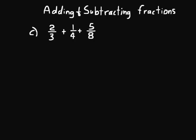Now let's apply what we know about making common denominators to adding and subtracting fractions. Adding and subtracting fractions is actually a little more complex than multiplying and dividing fractions — when we multiply and divide, we don't have to worry about common denominators. But when we add and subtract fractions, we must have common denominators. We'll find the least common multiple of the denominators, change all denominators to that LCM, and then we can add or subtract.